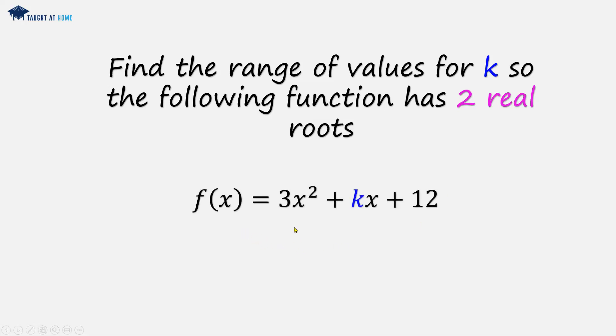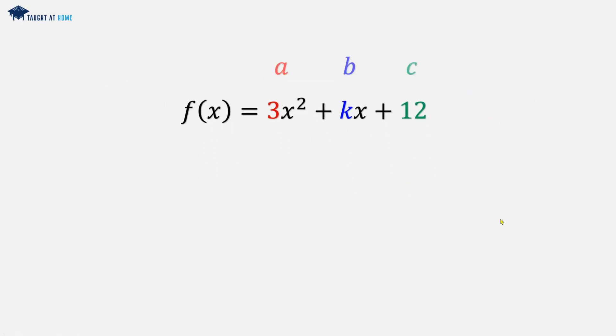We're given a function f(x) = 3x² + kx + 12. We need to find a value of k to give the quadratic function two real roots. Let's highlight our a, b, and c values: we've got 3 for a, k for b, and 12 for c.